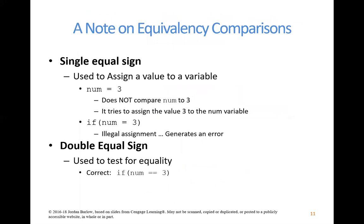A few more notes before I jump over and show you an example. Here's another common mistake beginners make: when doing a comparison in a control statement, do not use a single equal sign. If you want something to happen when the number equals 3, you need to write num == 3 with two equal signs. When using equals as a comparison to be evaluated as true or false, you must use the double equal sign. A single equal sign is the assignment operator — it tells C-sharp to assign the value 3 to the variable, which doesn't evaluate as true or false.